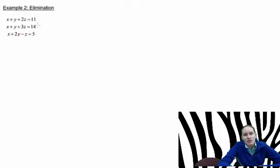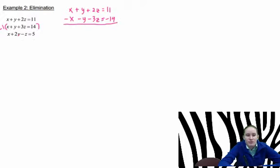So I am looking at the first two equations, and I say, well, I can really easily eliminate the x's. And so I would want to multiply one of my equations by a negative one to make that happen. So I have the first equation is x plus y plus 2z equals 11. And now I'm going to multiply by a negative one on the second equation.